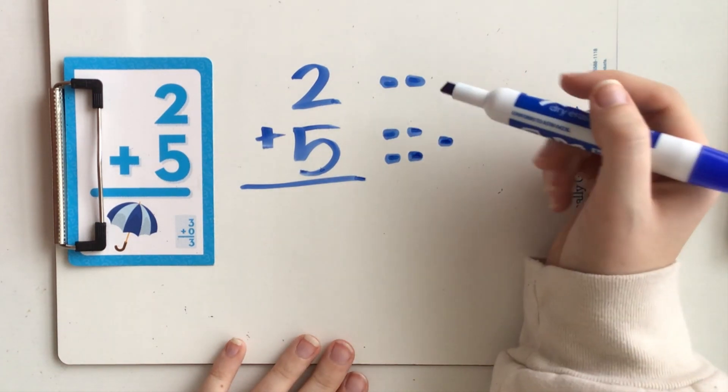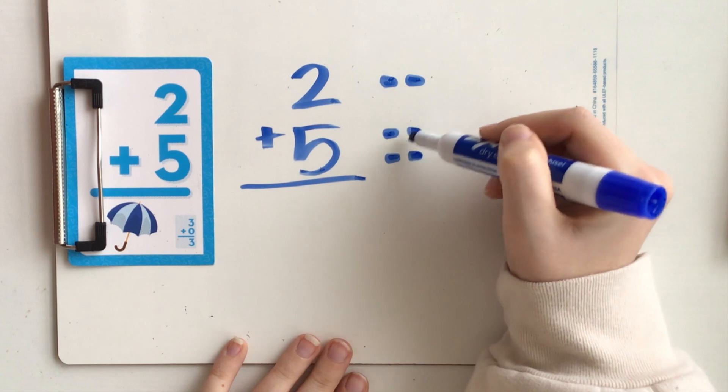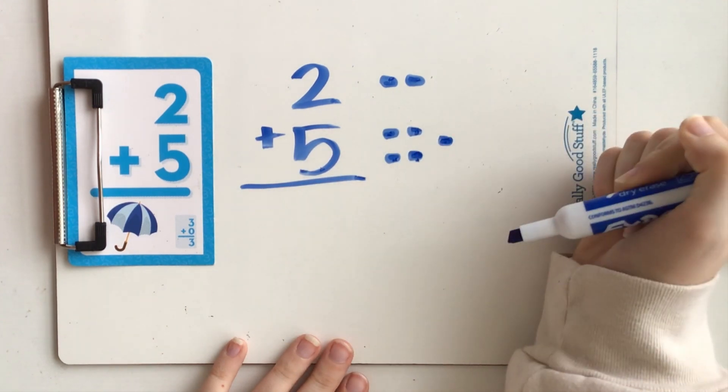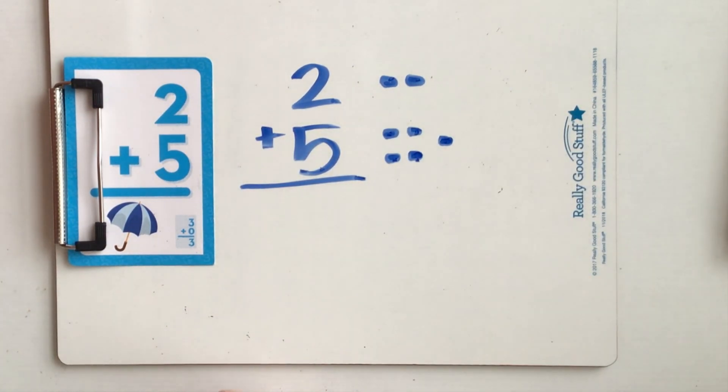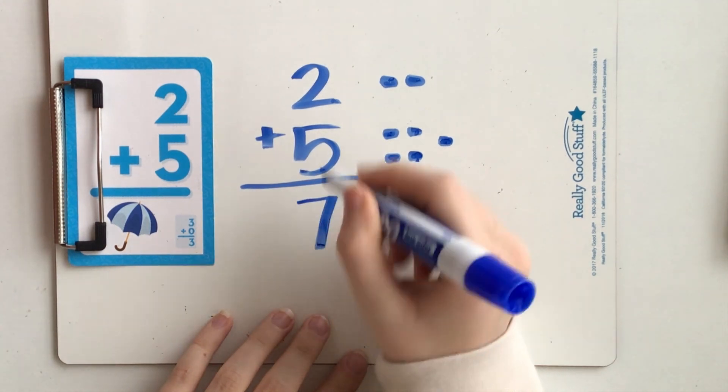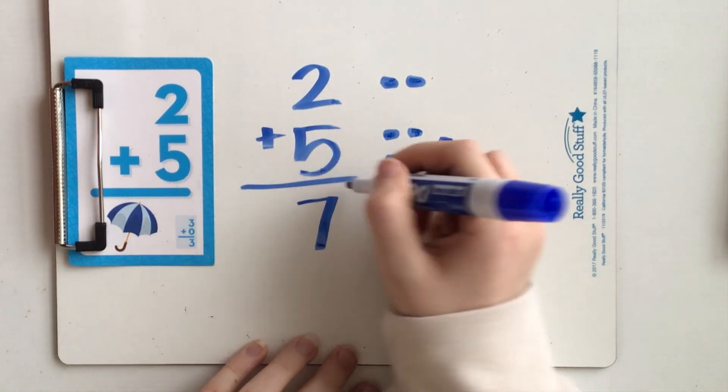Now I'm going to solve. One, two, three, four, five, six, seven. Two plus five equals seven.